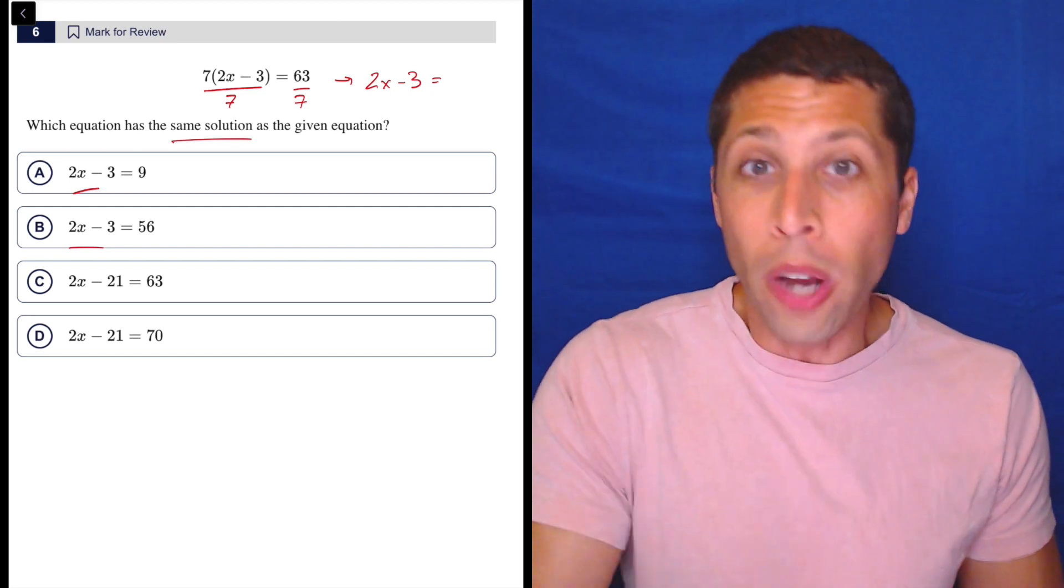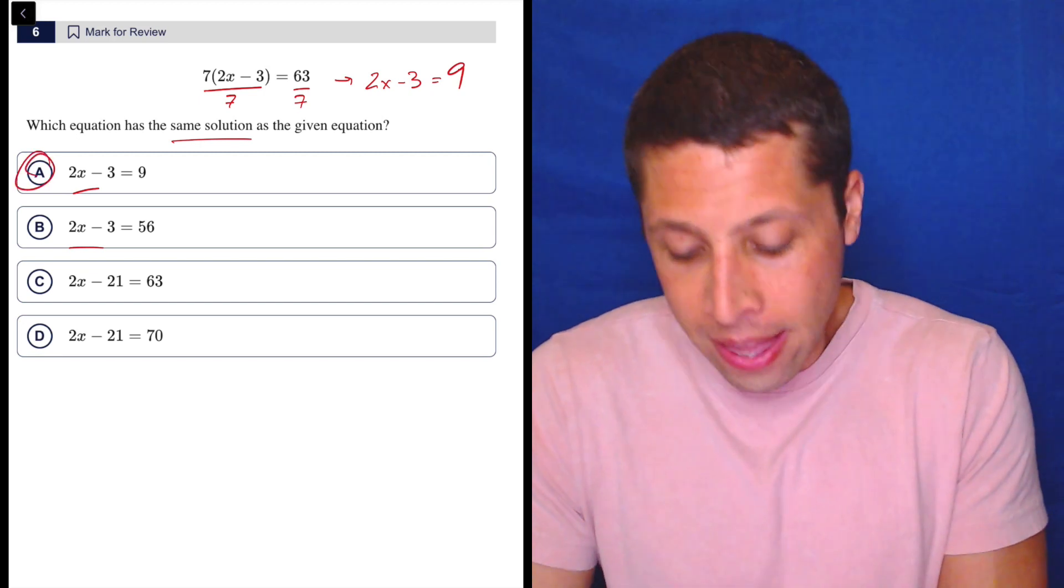If we did that to both sides, what would happen? Well the left side would just be 2x minus 3 and 63 divided by 7. You should know that that's going to work out. If you know your times tables, you know that dividing by 7 is going to work out nicely to give you 9. And then that's it. That's the answer.